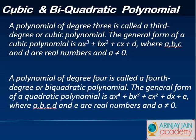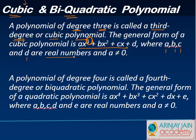On similar lines, you have cubic and biquadratic polynomials. A cubic is a third degree polynomial — where the degree is three. The general form is ax cubed plus bx squared plus cx plus d, where a, b, c, and d are real numbers and a is not equal to zero. It's always important that a is not equal to zero, because the moment a is zero the highest degree term vanishes and the degree falls to a lower one, placing it in a different category.